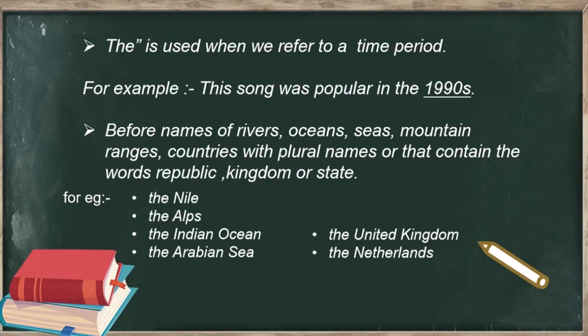We use 'the' before names of rivers, oceans, seas, mountain ranges, and countries with plural names or that contain the words republic, kingdom, or state. For example: the Nile, the Alps, the Indian Ocean, the Arabian Sea, the United Kingdom, the Netherlands.